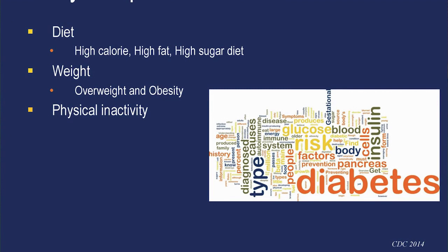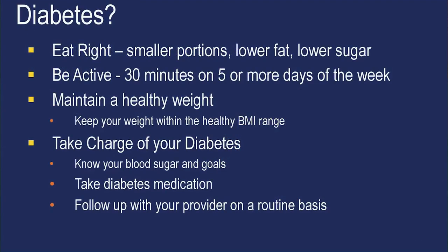Lifestyle impacts diabetes risk — eating a diet high in calories, fat, and sugar can lead to diabetes, as can being overweight and physically inactive. There is also a genetic component. To prevent and control diabetes, eat small portions that are lower in fat and sugar, be active 30 minutes on five or more days a week, and maintain a healthy weight. If you have diabetes, know your blood sugar levels and goals, take your diabetic medications, and follow up with your provider routinely.